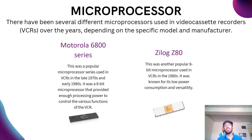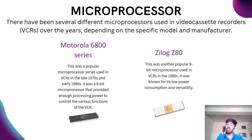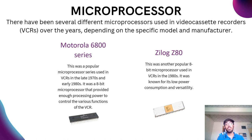Now we will see the various types of microprocessors and computer organization used in a video cassette recorder. The first microprocessor is the Motorola 6800 series. This was a popular microprocessor series used in VCRs in the late 1970s and early 1980s. It was an 8-bit microprocessor that provided enough processing power to control the various functions of the VCR.